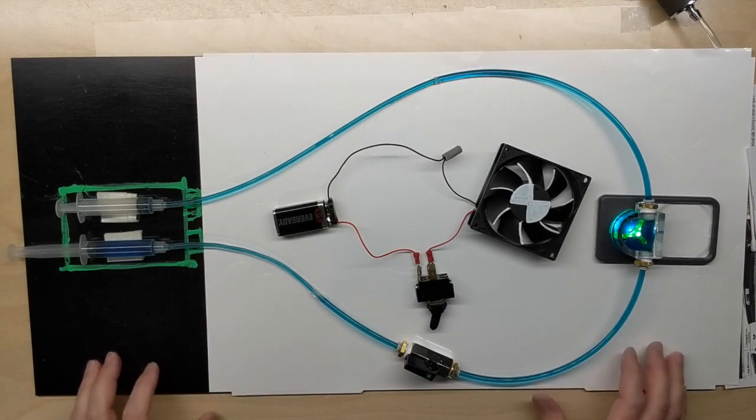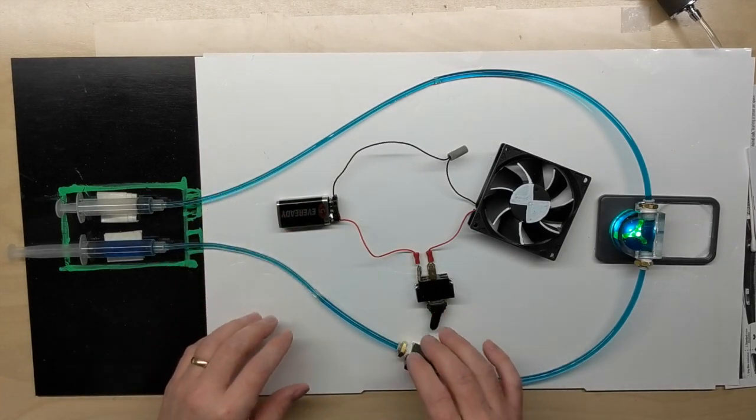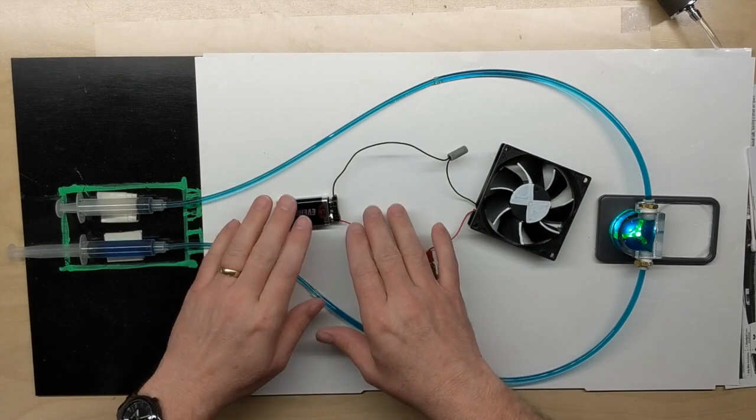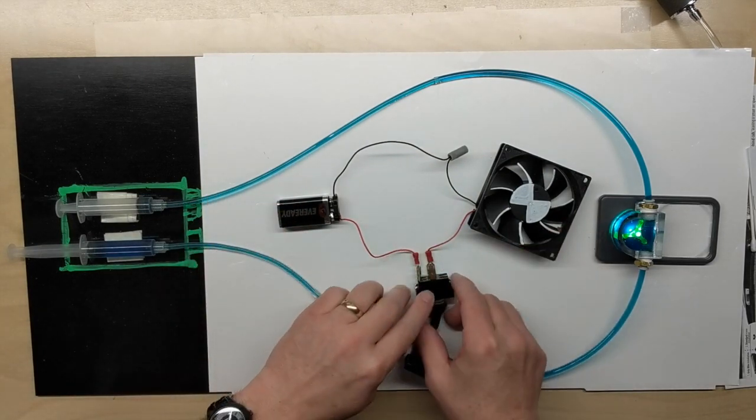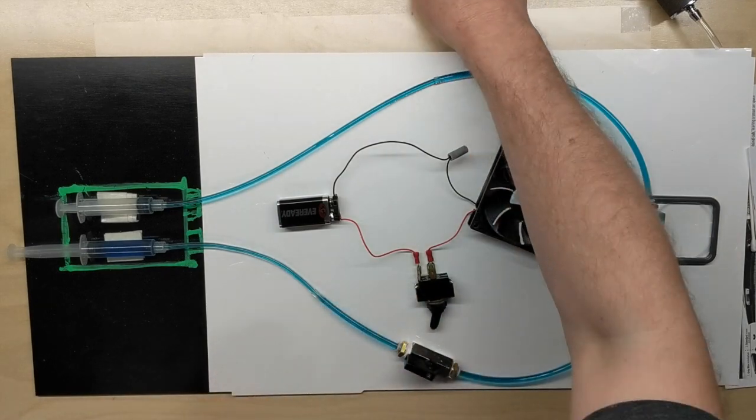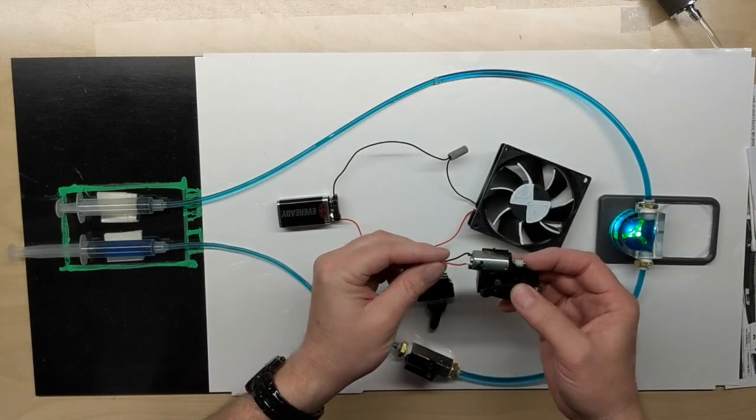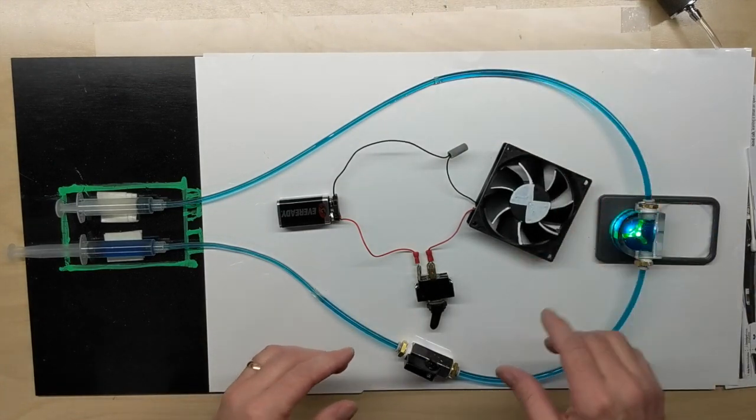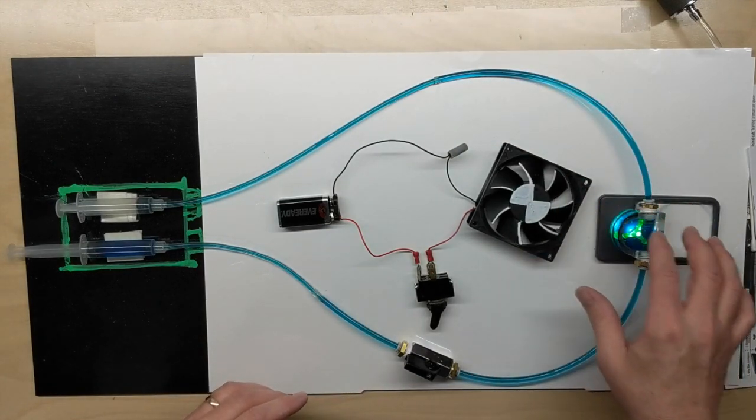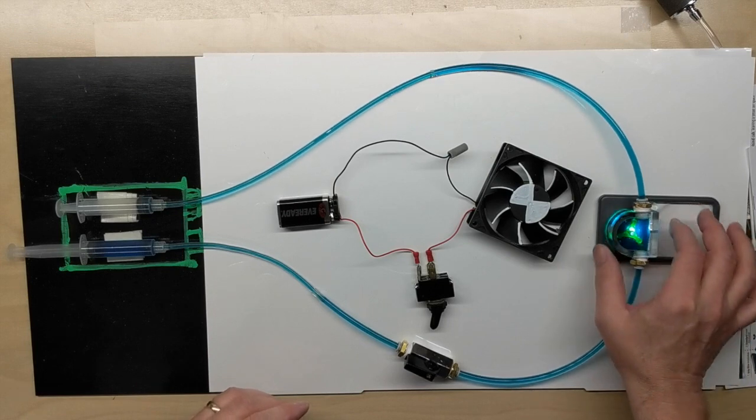So in the last episode we learned about voltage and how a source like a power supply or battery is needed to make something like a motor run. Today, instead of this small motor with the lever on it, I just simply have a fan which may be more analogous to this paddle wheel.